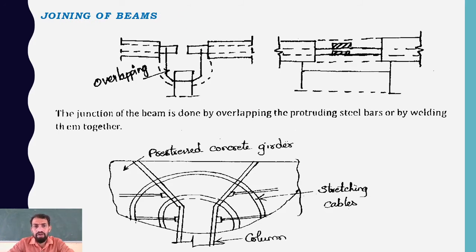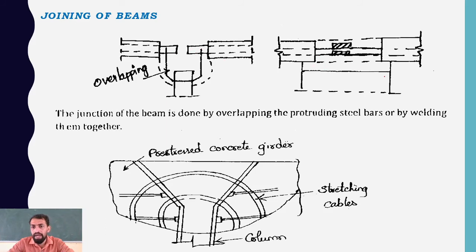Joining of beams: one method uses overlapping where one beam laps over another and concrete casting is made. Another method uses welding connections, with steel plates welded between the two beams at the support. The junction of the beam is done by overlapping of projecting steel parts or by welding them together.